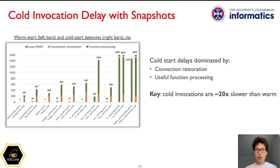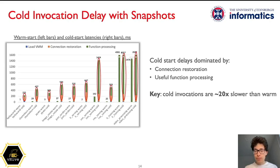First, we characterize the latency breakdown for each function type for warm and cold invocations. We measure latencies from the point of the micromanager injecting the request to a function, to the point of receiving the corresponding response. On this chart, you can see the measured latency breakdown as pairs of stacked bars for each function type. Left bars show warm invocation latencies while right bars show cold invocation delays. One can see that warm invocations are notably faster than their cold counterparts. Upon a cold invocation, the micromanager needs to restore the gRPC connection to the function inside the VM, which takes a considerable amount of time. Second, the actual function processing takes an order of magnitude more time than for warm invocations.